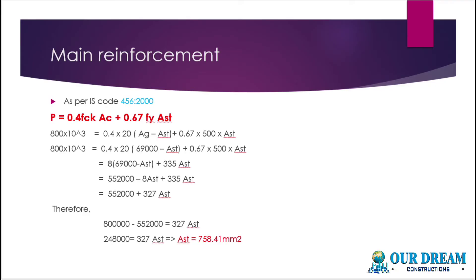800 × 10³ equals 0.4 × fck × Ac + 0.67 × fy × Ast. Grade of concrete is M20, so fck = 20. Area of concrete is gross area minus Ast — that is Ag − Ast. Plus 0.67 × fy — fy is grade of steel, we use Fe500, so fy = 500 — into Ast. Solving this normal mathematics, Ast equals 758.41 mm². That is the area of steel required. In this column, 758.41 mm² of steel is used.